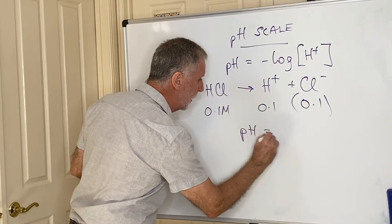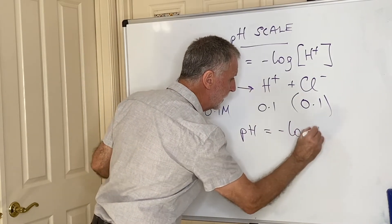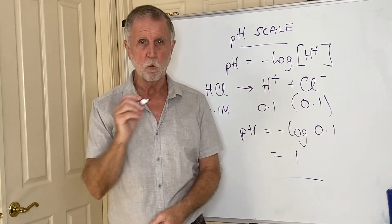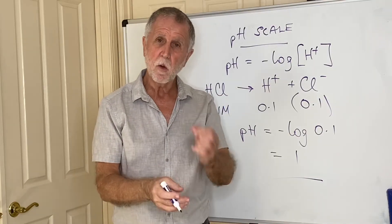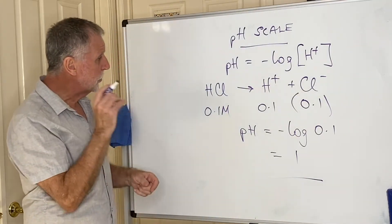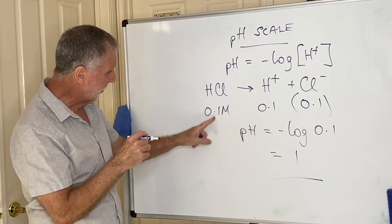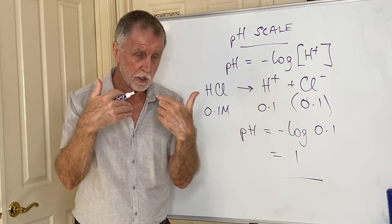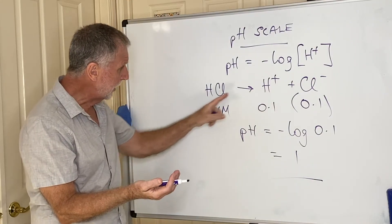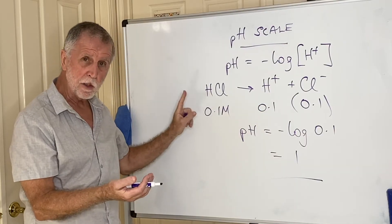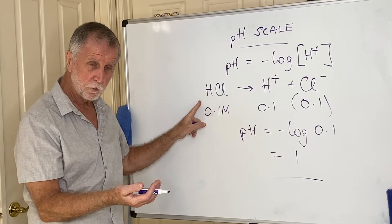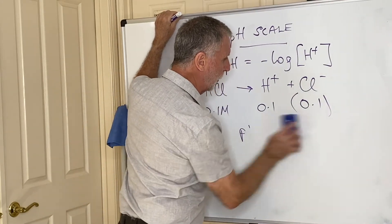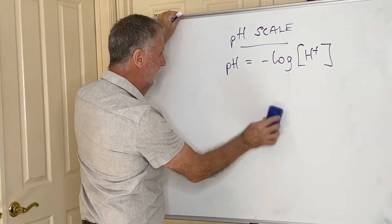So if I want the pH now, I would go pH equals minus log to the base 10 of 0.1, and that gives me a value of 1. Strong acids are easy, but please don't go straight from concentration to pH — write the equation first, check that it's a one-to-one ratio, and if it's not, adjust the H⁺ concentration accordingly for however many H⁺ have been produced.